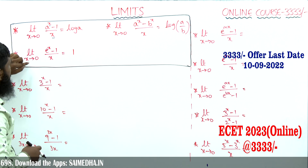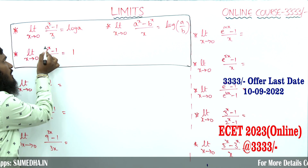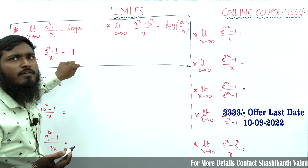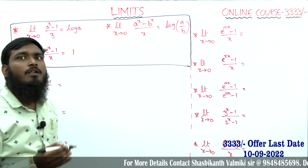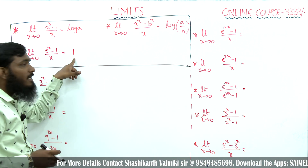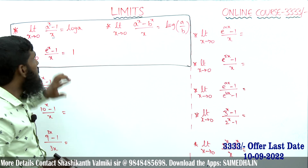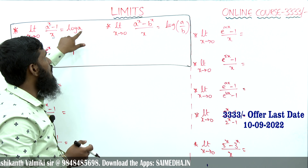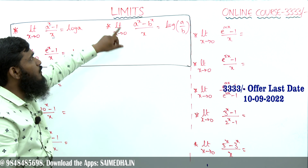Similarly, limit x tends to 0, e^x minus 1 divided by x: since the x parts are the same, we apply the same TSR and write log e. But since log e equals 1, we write the answer directly as 1. If it is e^x, write 1; for any other base, write the corresponding log value — log 2, log 3, log 4, log 5, and so on.